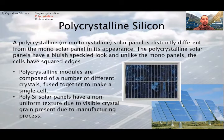Now, we will see the polycrystalline or multicrystalline solar cells panels. It is distinctly different from the monosolar panel in its appearance. The polycrystalline solar panels have a blue-speckled look, a non-uniform texture due to the visible crystal grain, and unlike the mono panels, the cells have square edges. Apart from the appearance, the processing method is also different. Polycrystalline modules are composed of a number of different crystals, fused together to make a single cell.